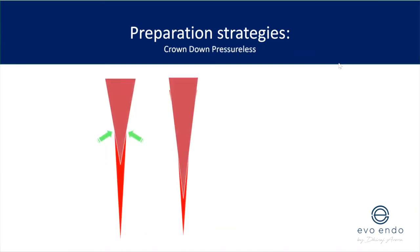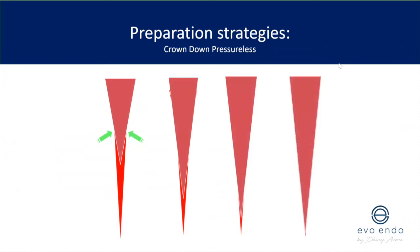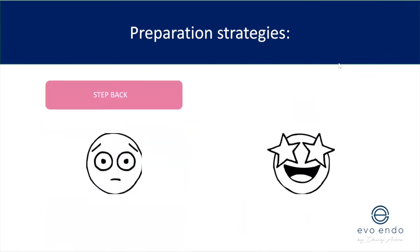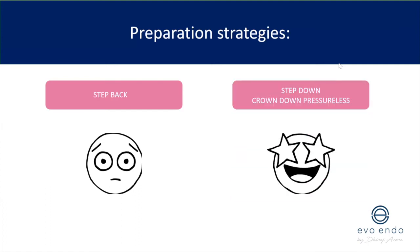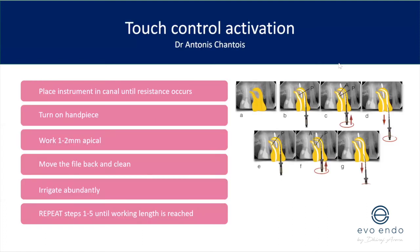This is what a crown-down pressureless sequence looks like: you're widening the canal coronally before going deeper within the root canal system. Step back technique without early coronal flaring — the double modified technique — I'm not sure about. Step down or crown down pressureless is what everyone should be doing.